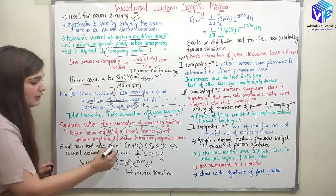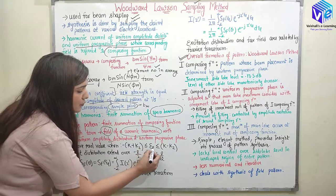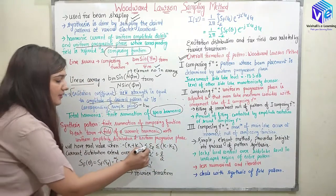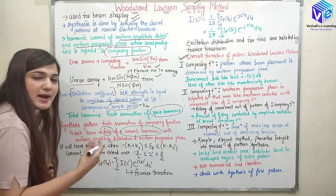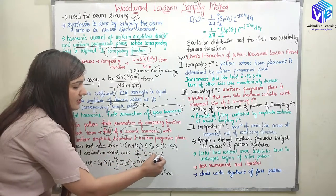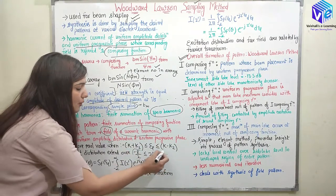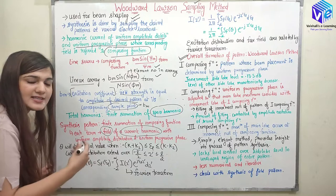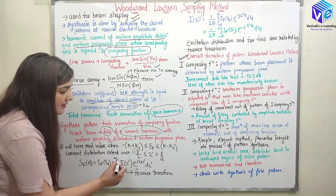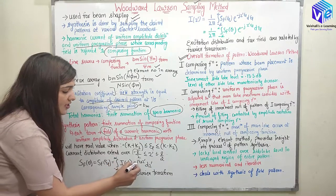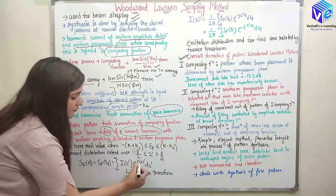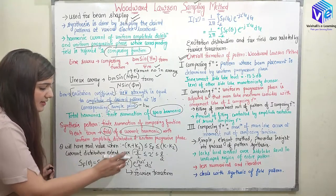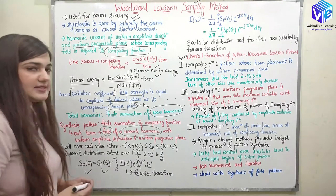Here, θ will have values from −k + kz ≤ ζ ≤ k − kz, and the current distribution is extended over −L/2 ≤ z' ≤ L/2. We can represent Sf(θ) or Sf(ζ) as the Fourier transform of the current: Sf(ζ) = ∫ I(z') · e^(jζz') dz', where I(z') is the current and e^(jζz') dz' is the Fourier transform kernel.